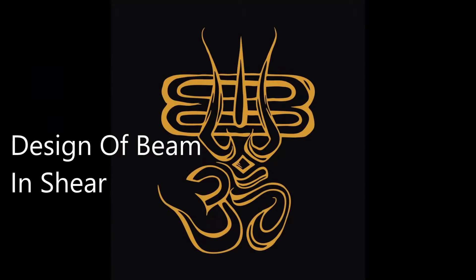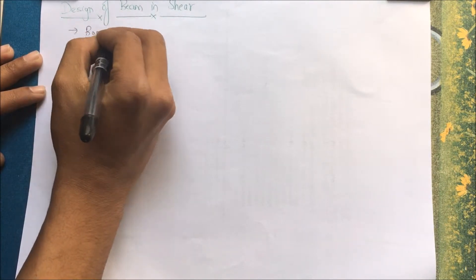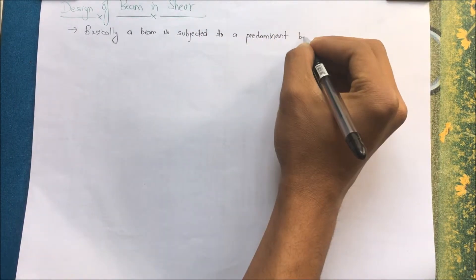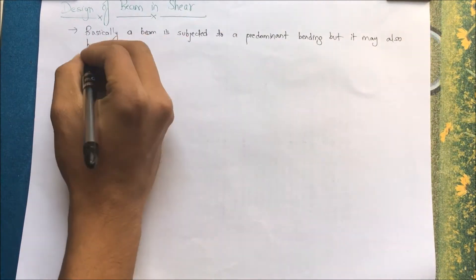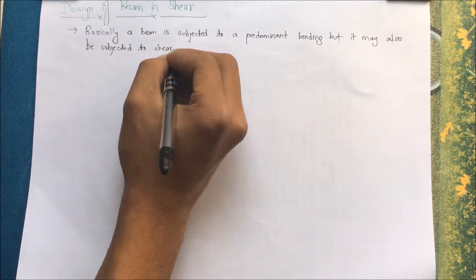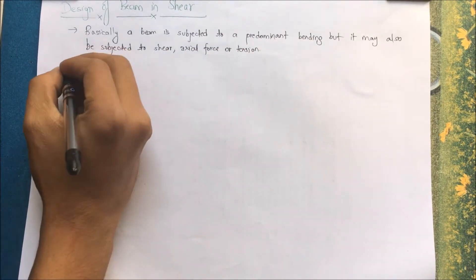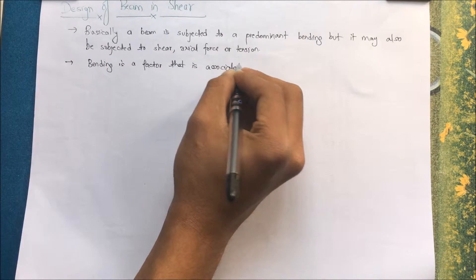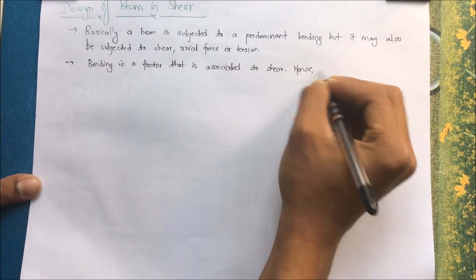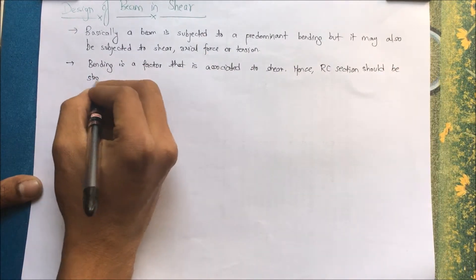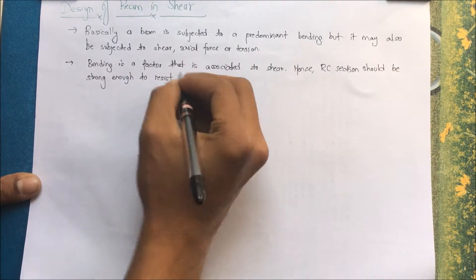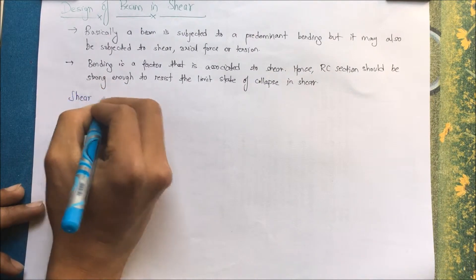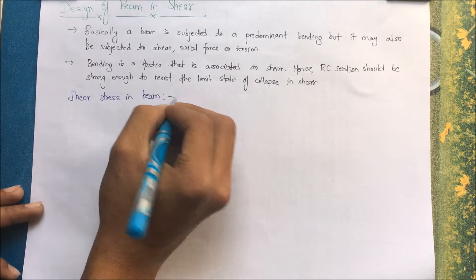In this video we'll be discussing the design of beams in shear. A beam is subjected to predominant bending but may also be subjected to shear, axial force, or tension. Bending is associated with shear, because with shear, bending also occurs in the section. Hence an RC section should be strong enough to resist the limit state of collapse in shear.